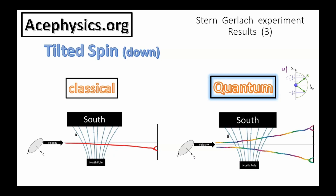I will soon work out the exact probabilities to give you a clearer picture of the quantum behavior. If the spin was tilted all the way down, what would happen? In that case, both quantum and classical results would agree.